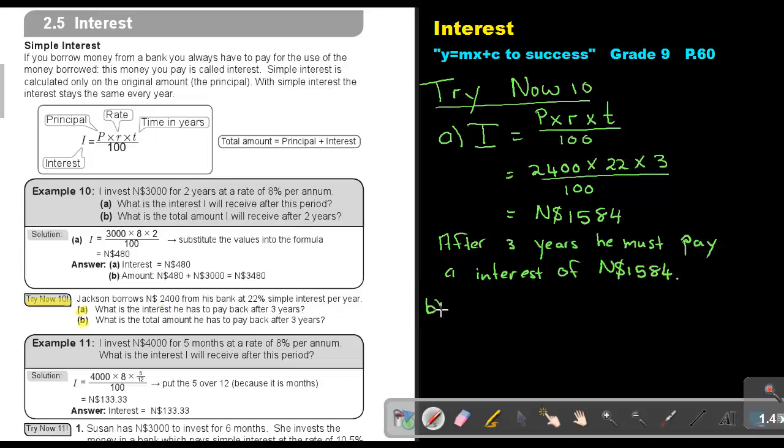Number B. What is the total amount he has to pay back after 3 years? So the total amount, remember, it will be the original principal, which was 2,400, plus that interest after that 3 years. And that will give me a sum total of 3,984. And that's the amount he must pay back after 3 years.